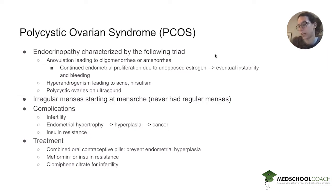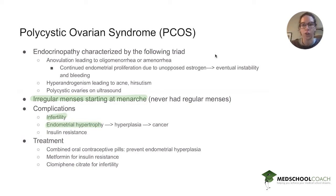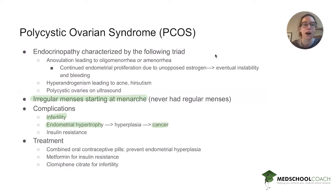An important clue on history is that these irregular menses started at menarche — these women never had normal periods every 28 to 35 days. Complications include infertility, since you have to ovulate to get pregnant. The most concerning complication is endometrial hypertrophy, because unopposed estrogen constantly signals the endometrium to proliferate without progesterone to counterbalance it. This can eventually cause endometrial hyperplasia and lead to endometrial cancer.